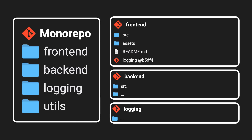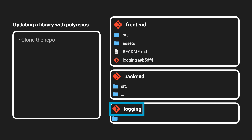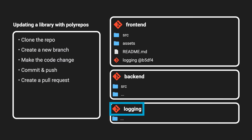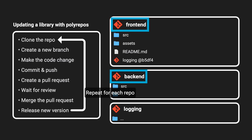Like in the earlier example, let's say you want to update the logging library and its consumers. You'll need to find that repo and clone it, create a branch, make the code change, commit it, and make a pull request. Depending on your team's workflows, you might even have to wait for a review before you can merge it and release a new version. Then you need to track down all the repos that consume this library and update them, going through all this effort for each repo again.